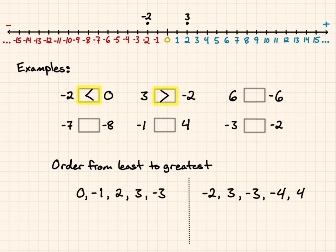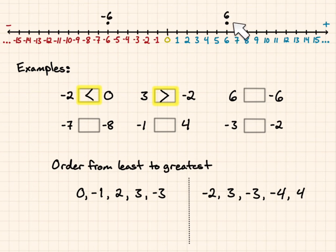If I'm comparing 6 and negative 6, I can put them on the number line. I can see that 6 is to the right of negative 6, so 6 is greater than negative 6.